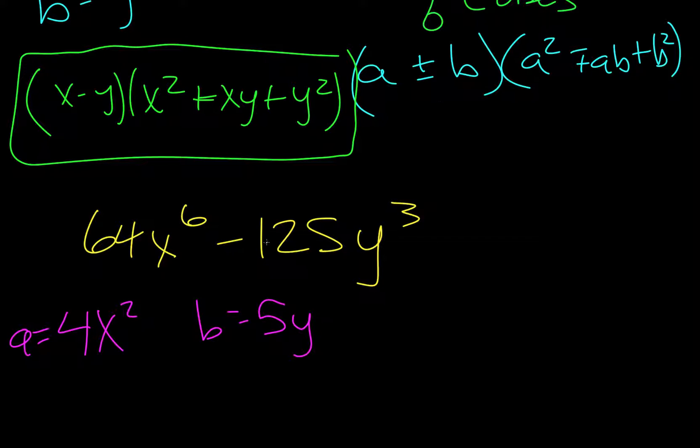So we do this. Once again, it's a minus sign, so we're going to follow the bottom. So we write down a, 4x squared, minus. Then we write down our b, 5y. So that's the first group of parentheses up here. We start another parenthesis. We square a.